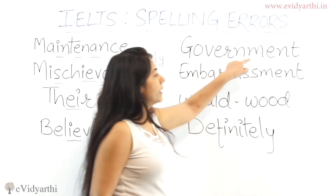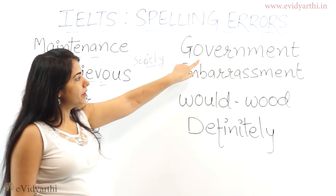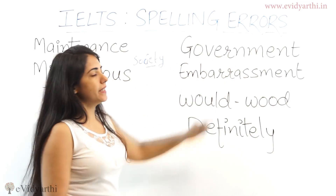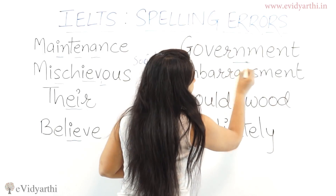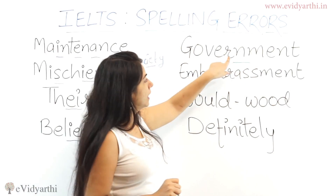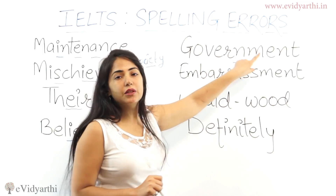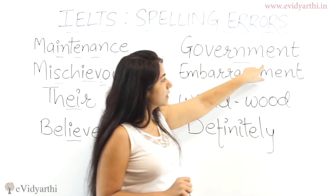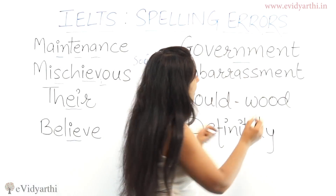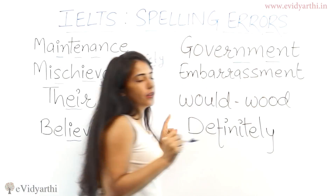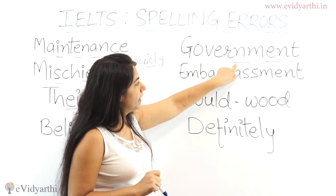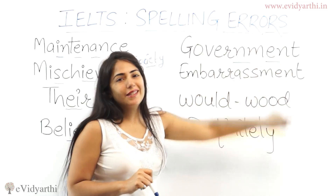Next is 'government.' Students often forget to write the 'N' — that is the first common mistake. The second very common mistake is that people write 'M-A' instead of 'M-E.' So you have to be very careful: it's G-O-V-E-R-N-M-E-N-T.